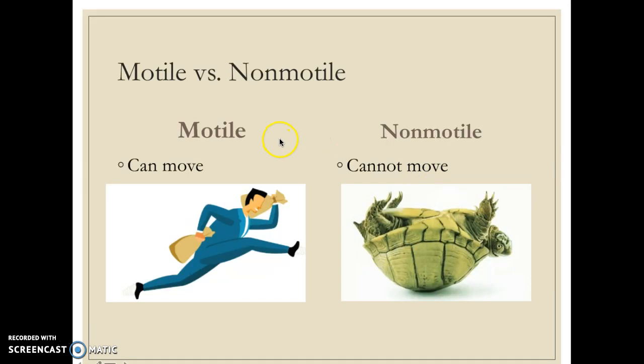Another important vocabulary term is the difference between motile and non-motile. Sometimes we also call non-motile 'sessile.' Non-motile and sessile basically mean not moving. An organism that is motile can move around, while an organism that is non-motile or sessile does not and cannot move. Note: turtles do move — that's actually a bad example in the image, just be aware of that.